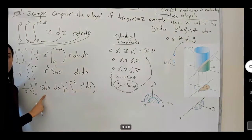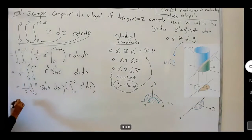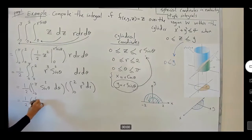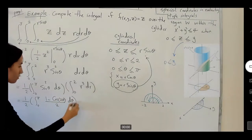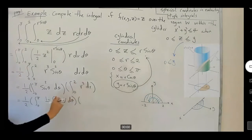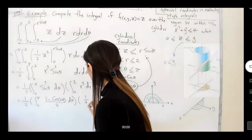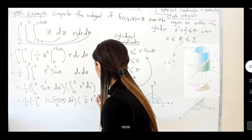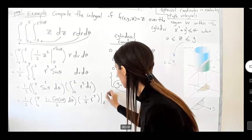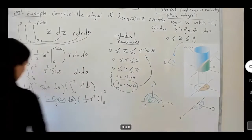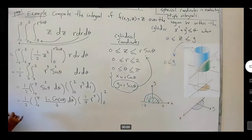For sine squared, we have to use half angle formula. This is equal to half integral 0 to π, 1 minus cosine 2 theta, divided by 2, dθ. And here I have, it's not very hard to calculate, r to the 4, r starts from 0, and it stops at 2.